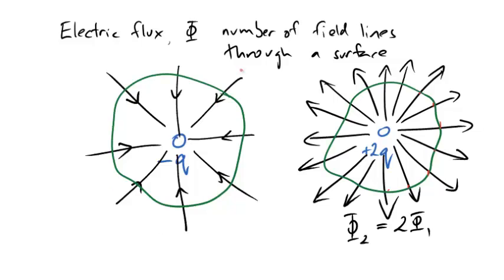Again, every field line that's heading towards that charge will pierce through that surface. But now instead of moving out of the surface, it's moving in. There's a field line in, there's a field line in. And we say that when it pokes in towards the surface, that actually contributes a negative flux. And we'd say in this example here that our flux, we want to call it flux 3, will now be a negative quantity.